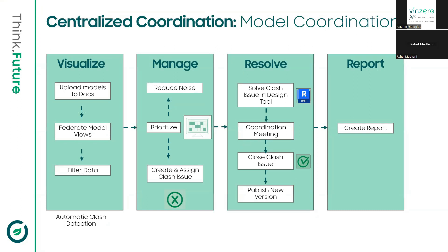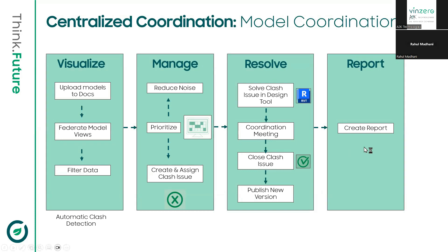To summarize the model coordination workflow: we begin with the Visualize phase, where we create views and filter the data we want for clash detection. In Manage, we prioritize and start creating issues for the clashes. In Resolve, we resolve those clashes in design tools. And finally in Report, we create clash reports. Once set up, you go through Manage, Resolve, and Report again and again until there are zero clashes between the models.